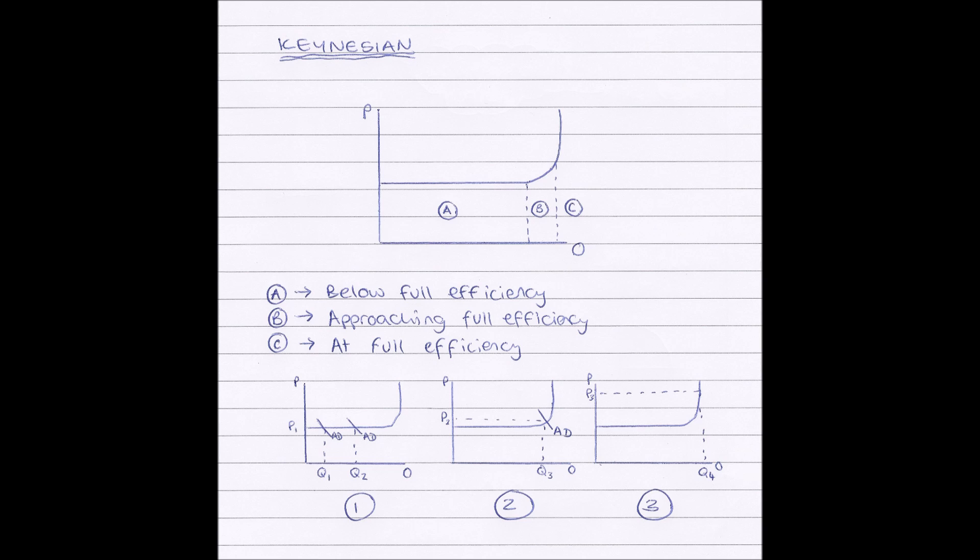However, as we move into section C, when the economy is working at full efficiency, then our price will just go up and up and up, no matter how much we try to change our quantity. And section C is equal to a classical long-run aggregate supply curve.